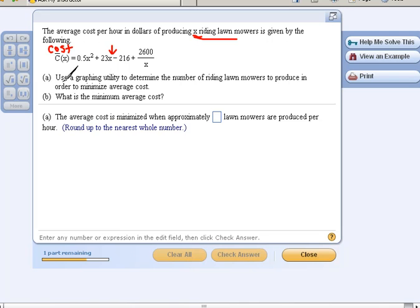So if we're going to use a graphing utility to do anything, that means we're going to have to graph this, right? So in our graphing utility, we can only graph things that are in the form of y equals. Well, technically, this C of x can be replaced with y, because remember, your function notation is just a fancy way of saying y.